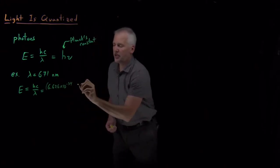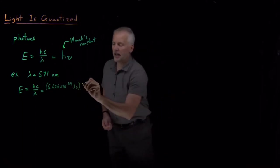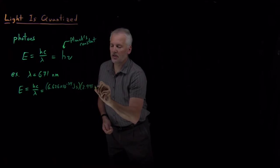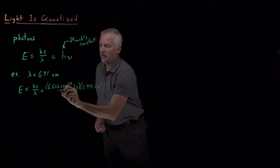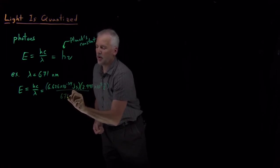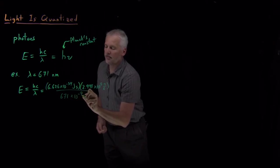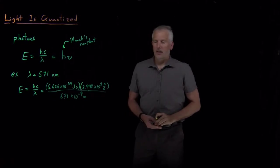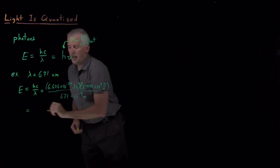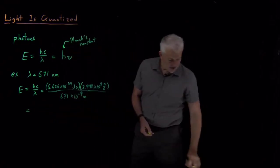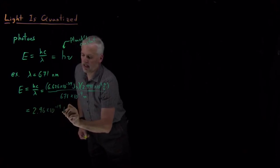Planck's constant, as I mentioned, is this value, 6.626 times 10 to the minus 34th joule seconds. Speed of light is another constant, 2.998 times 10 to the eighth meters per second. If I divide that by the wavelength, 671 nanometers, or 671 times 10 to the minus ninth meters, that's just a simple set of numbers to multiply and divide, and when we do that, the energy works out to be some tiny number of joules.